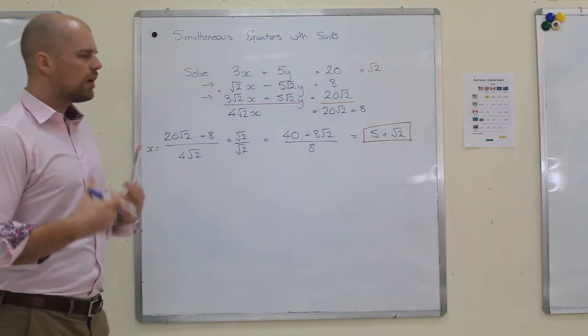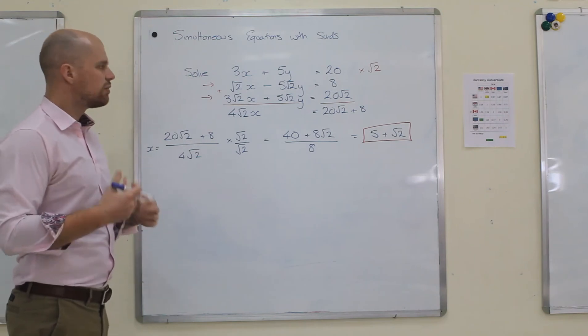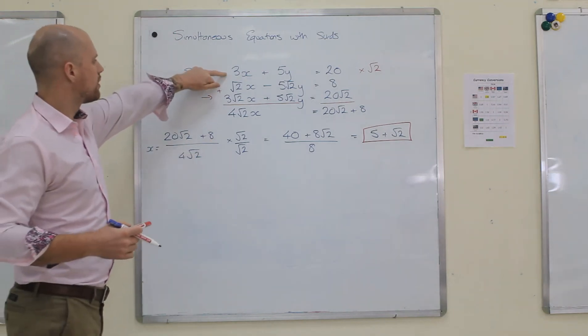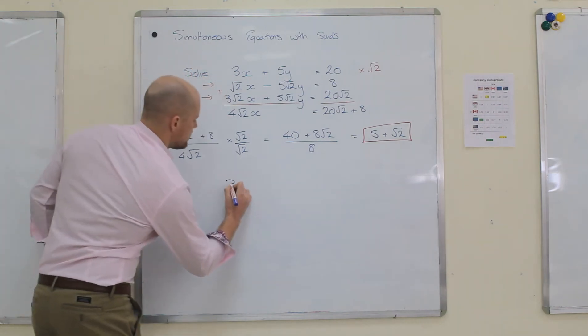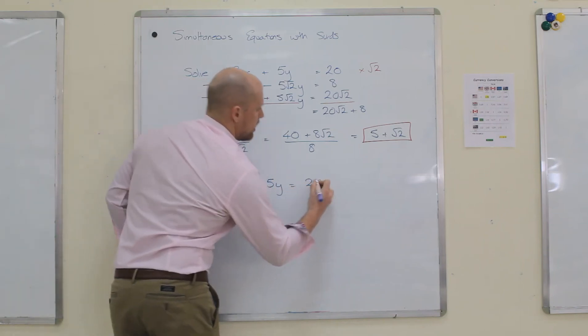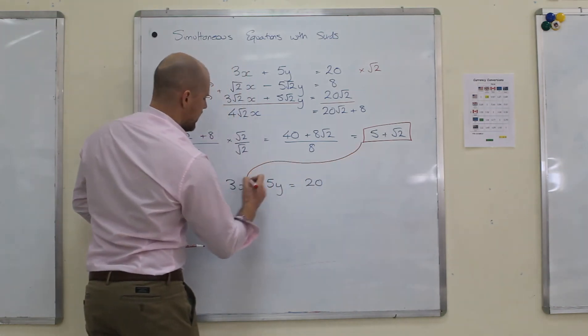Now, all I now need to do is substitute it into one of these equations and rearrange to find y. The easiest one to put it in will be this one, because it doesn't have any surds in it at the moment. So I'm going to take it into this equation here. I'm going to substitute. This is my x, so the x comes in there.